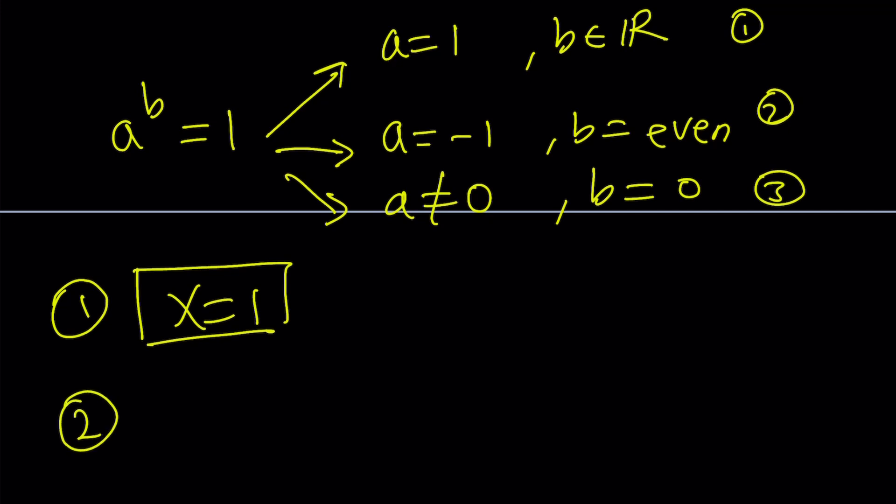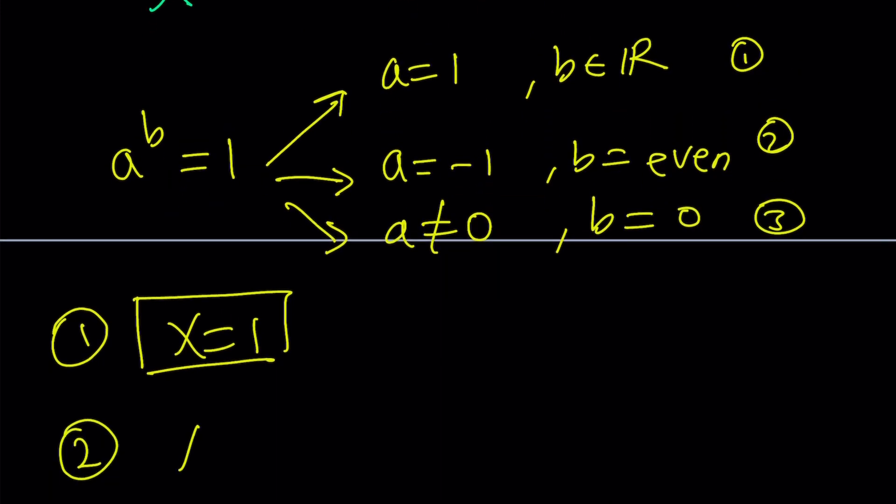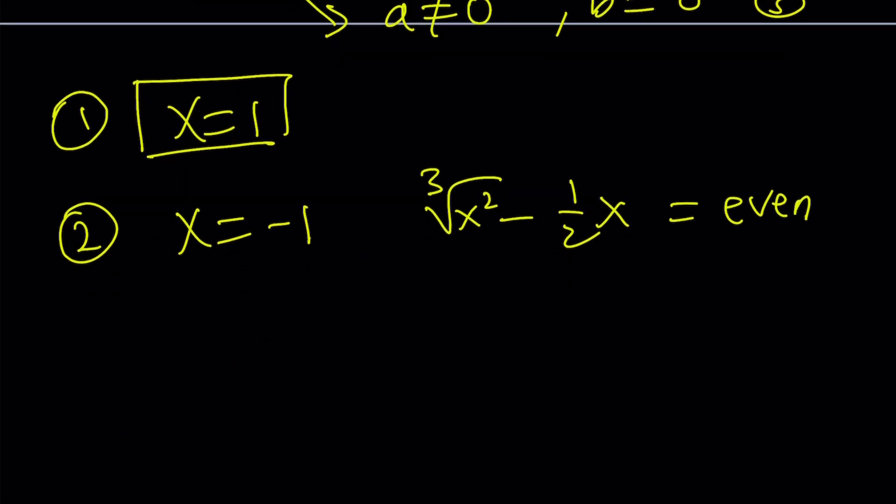Let's look at the second case. That was easy, right? A equals negative 1. Now, x is negative 1, and cube root of x squared minus 1 half of x must be even. Is it possible? If x is negative 1, x squared is 1, cube root of 1 is 1 in the real world, right? And half of negative 1 is negative 1 half, with a minus sign, this becomes positive 1 half. Do you think 3 halves is even? No. Not even when you double it, right? So it's not going to work. x equals negative 1 does not work, too bad.